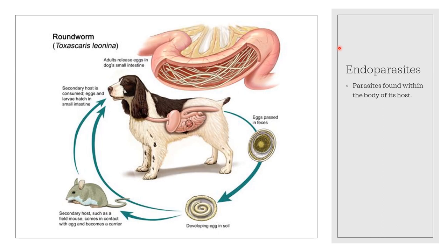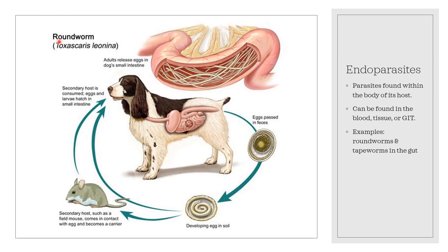Endoparasites are parasites found within the body of their host. They can be found in the blood, tissue, or GIT. Examples of endoparasites are roundworms and tapeworms in the gut. A diagram shows an example of an endoparasite — the helminth parasite roundworm, Toxascaris leonina, found in the gut of its host. Endoparasitism is the parasitism by an internal parasite, while ectoparasitism is the parasitism by an external parasite.